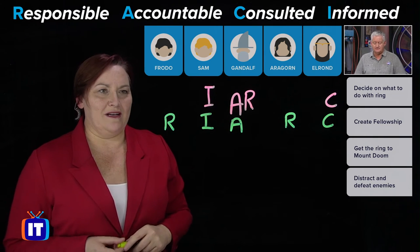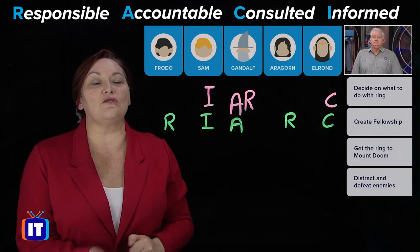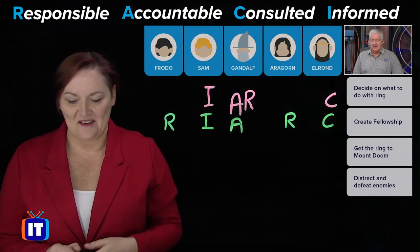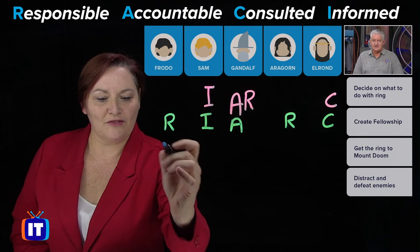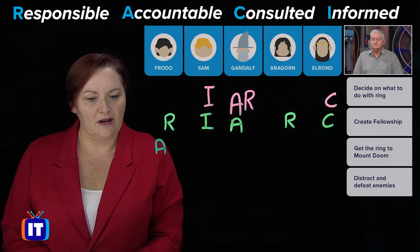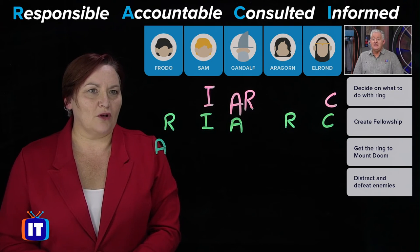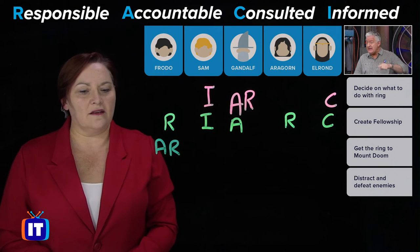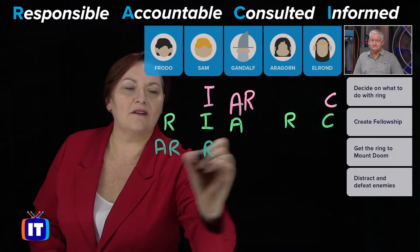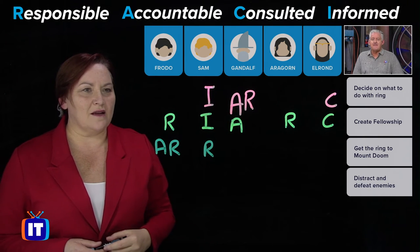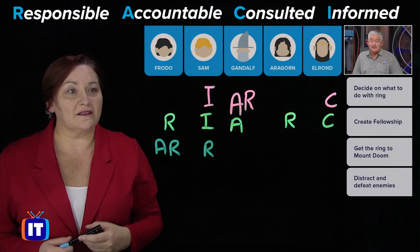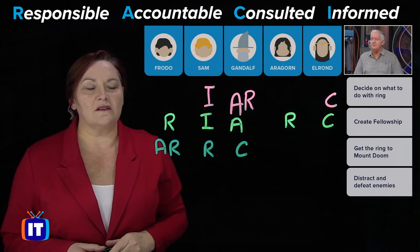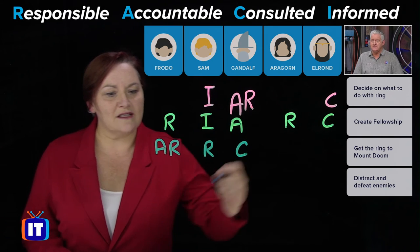What about getting the ring to Mount Doom? Who ensures the ring goes there? We're going to give Frodo his due — he's accountable. And he's also responsible, as is Sam, since they're going on the journey together. They're going to consult Gandalf, of course. And Aragorn is informed.